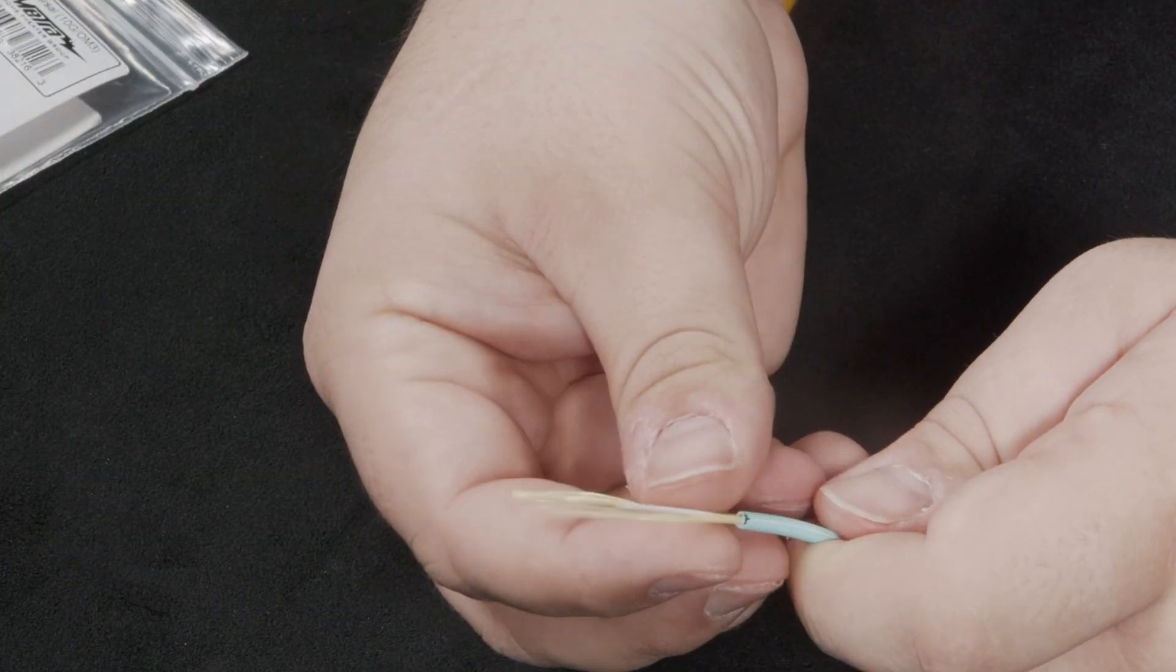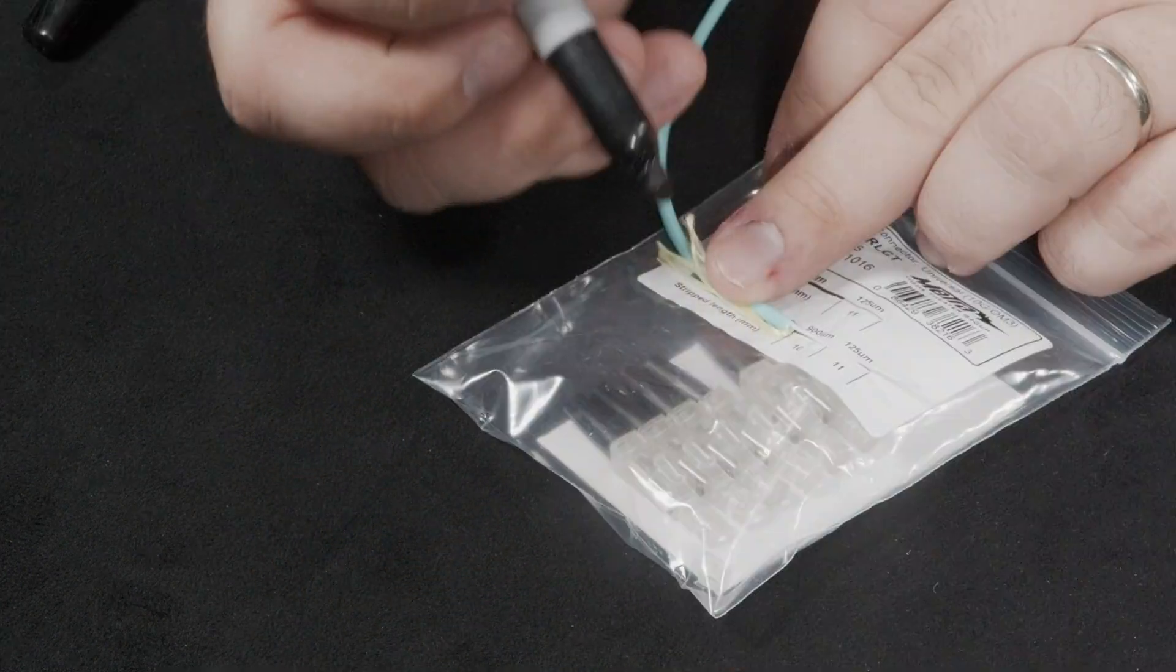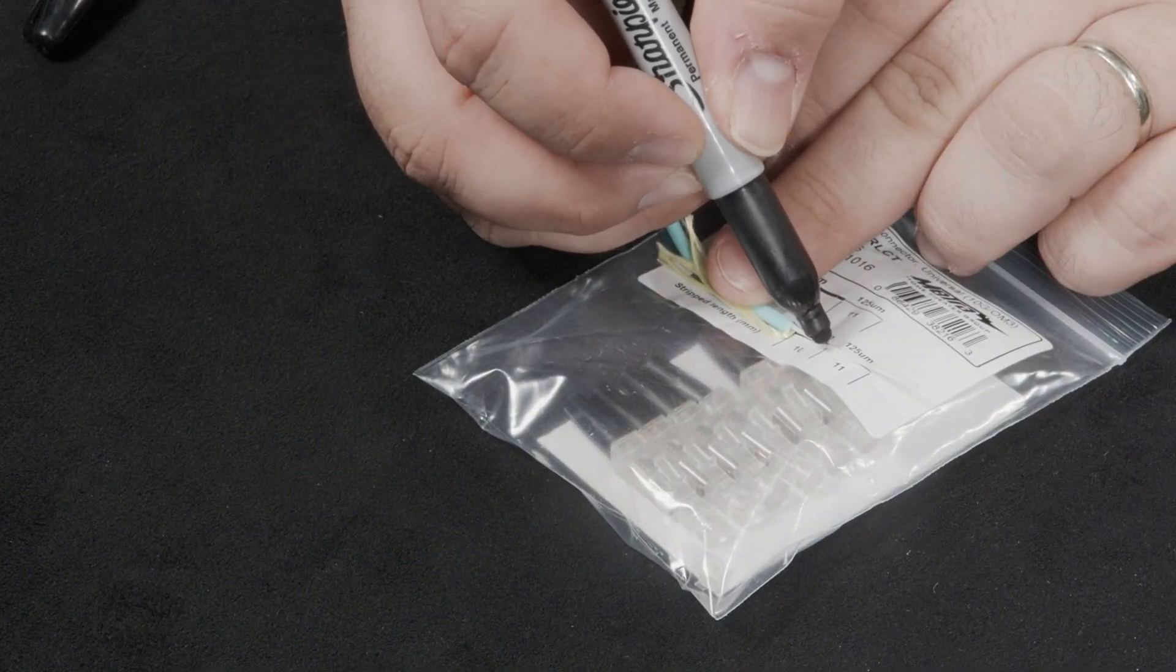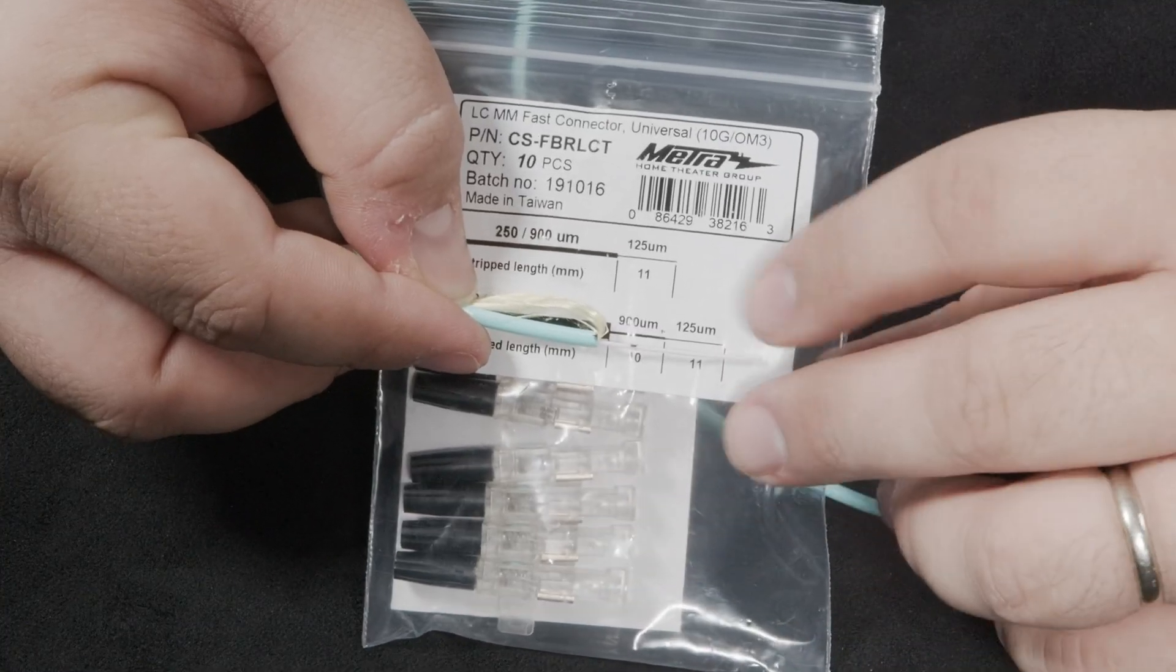Take the Kevlar strands and pull them aside out of the way. Again lay the fiber out on the diagram and mark where the inner shielding needs to be removed. In this case at the 10 millimeter mark.